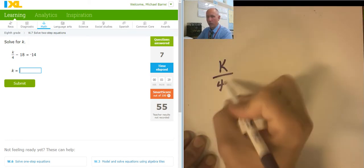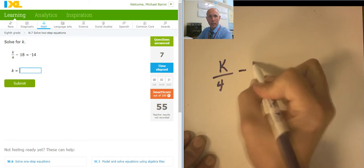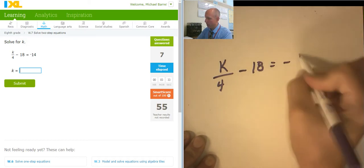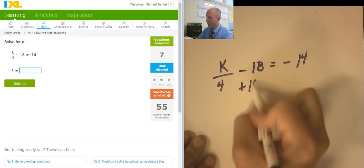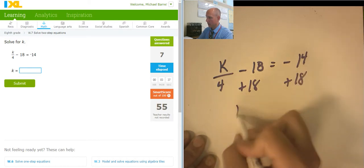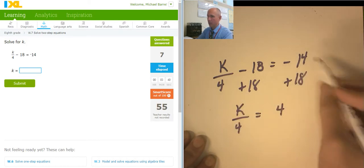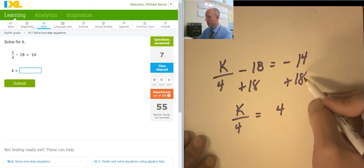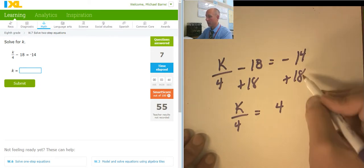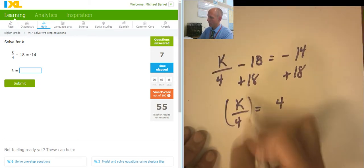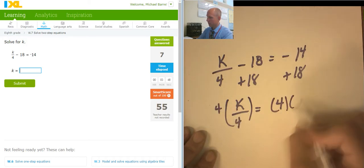Same type of problem. k over 4 minus 18 equals negative 14. I'm going to add 18 to both sides. So k over 4 equals 4. Same sign, add and keep. Different signs in fact. Keep the sign of the higher number. And now I'm going to multiply both sides by 4. So k equals 16.